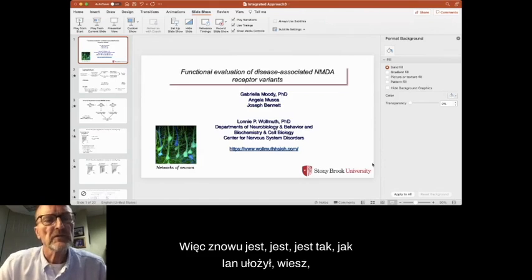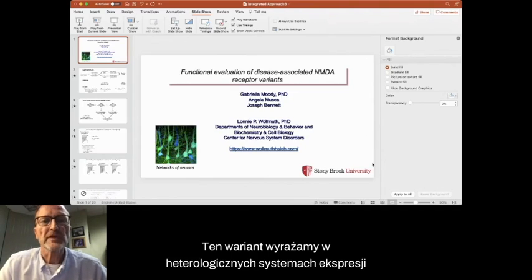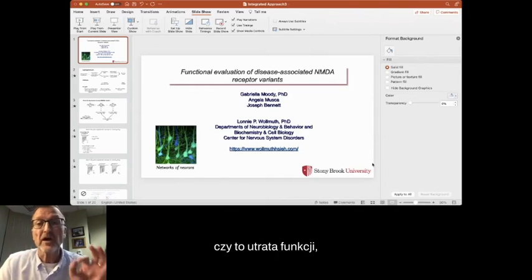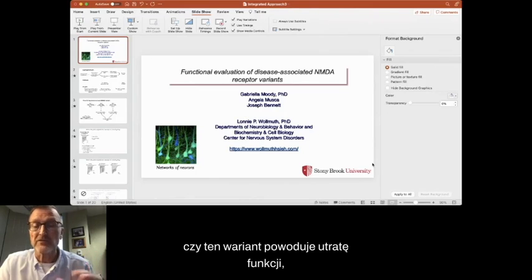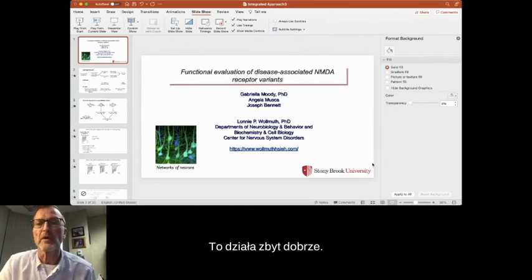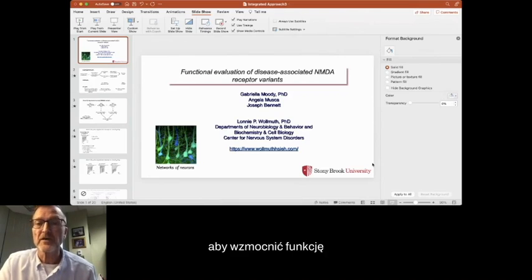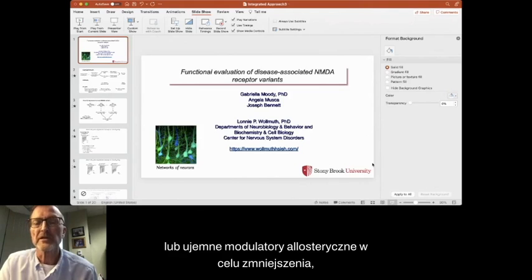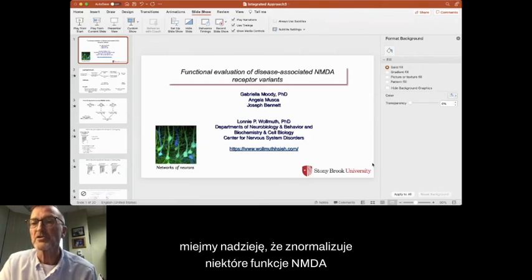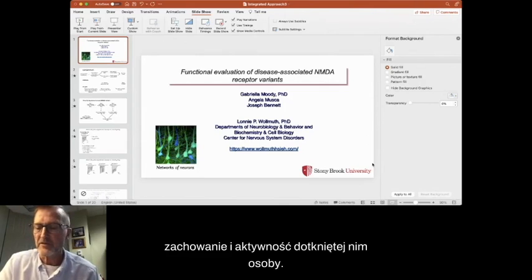So again, as Ian sort of laid out, an individual is identified with a missense mutation in a GRIN gene. Again, I'm focusing on NMDA receptors. We express this variant in heterologous expression systems, and we test function. And again, what's our goal? Our goal is to identify whether it's a loss of function, whether this variant is causing a loss of function, that is, the protein doesn't work as well as it did before, or it's a gain of function, that is, it works too well. And correspondingly then, we want to bring in pharmacology, either positive allosteric modulators to enhance the function of the loss of function variant, or negative allosteric modulators to reduce the activity of these gain of function. And again, our goal is hopefully to normalize some of the function of the NMDA receptor, which in turn could normalize some of the behavior and activity of the individual affected.